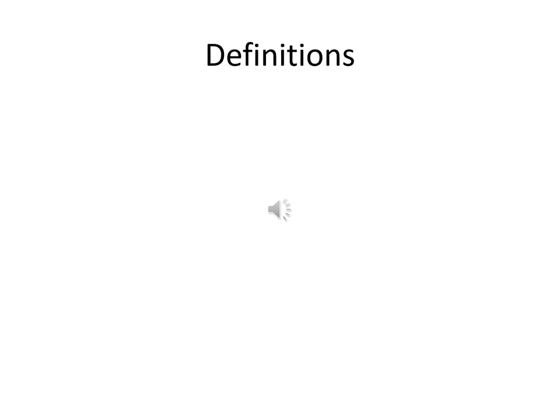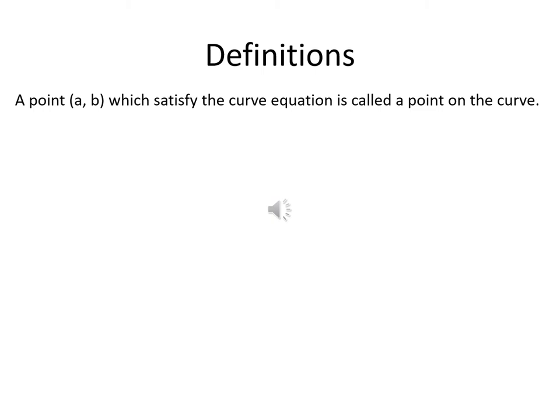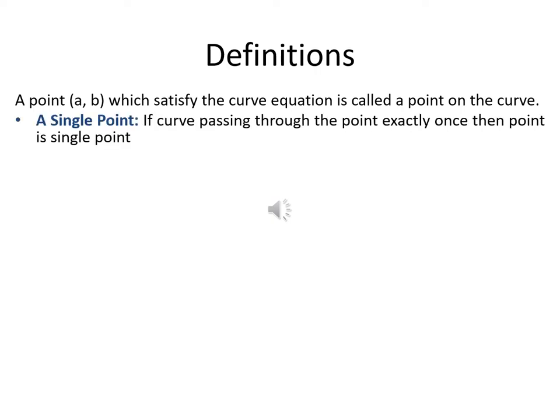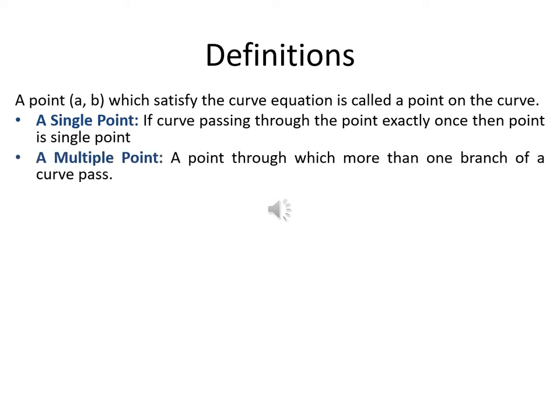Let's start with some basic definitions. First: a point on the curve. If any point (A, B) satisfies your curve equation — that means if we put x equal to A and y equal to B then LHS will be equal to RHS — then that point A comma B is on the curve. That point can be of four types. First, it can be a single point: if your curve passes through that point exactly once. But if your curve passes through any point multiple times, it is called a multiple point.